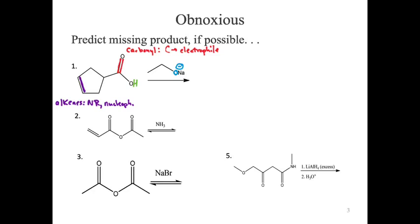The oxygen has lone pairs, so it could act as a nucleophile or base — really, base is the only particularly useful one. We also have the hydrogen, which acts as an acid. This is a carboxylic acid, so that's pretty acidic. And we have the oxyanion — the negative oxygen — which could act as a nucleophile or a base.